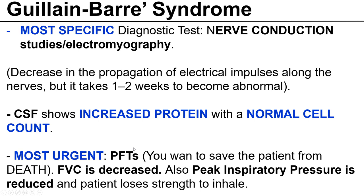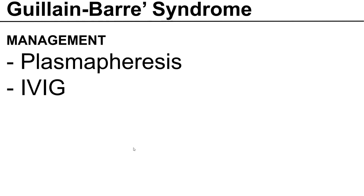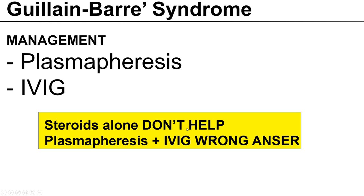That's the right answer in this question. Management of the patient includes plasmapheresis or intravenous immunoglobulin — you do one of them; both are equally good. A combination does not offer superiority over individual therapy. Also, steroids alone don't help. So whenever in the exam they give steroid as the right answer, steroids alone are not recommended management for Guillain-Barré syndrome. Plasmapheresis plus IVIG combined is also the wrong answer.